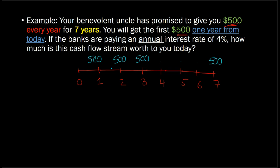This is an example of an annuity. There are three things that make a cash flow stream an annuity. First, you must have a constant cash flow stream, which in this case is $500. It's the same $500.